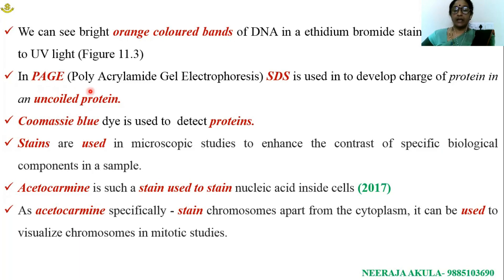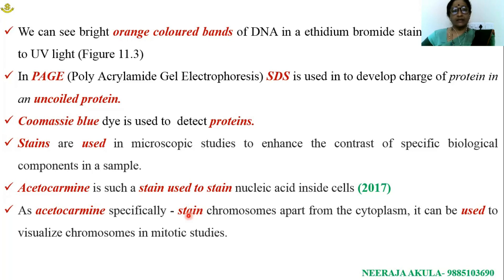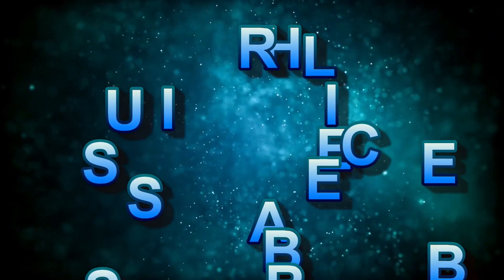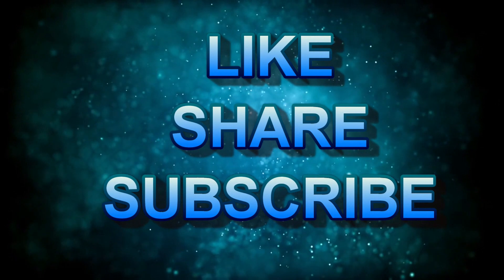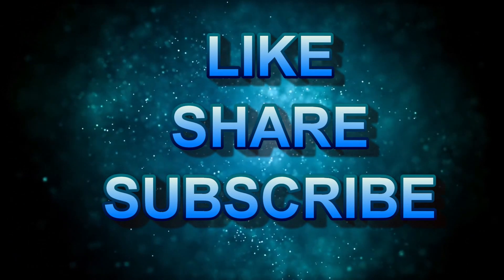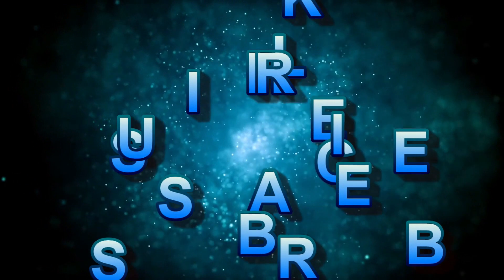In polyacrylamide gel electrophoresis, sodium dodecyl sulfate is used to develop charge on proteins, and Coomassie blue dye is used to detect proteins. Acetocarmine is used specifically to stain chromosomes and to visualize chromosome behavior during mitotic studies. If you like this video, please do like, share, and subscribe to Neeraja's Biology Academy. Don't forget to click the bell icon for subsequent updates.